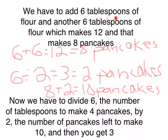We have to add 6 tablespoons of flour and another 6 tablespoons of flour which makes 12, and that makes 8 pancakes. 6 plus 6 equals 12 which equals 8 pancakes. Now, we have to divide 6, the number of tablespoons to make 4 pancakes, by 2. The number of pancakes left to make 10 and then you get 3. 6 divided by 2 equals 3 which equals 2 pancakes. 8 plus 2 equals 10 pancakes.